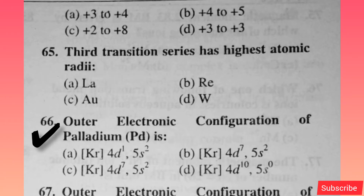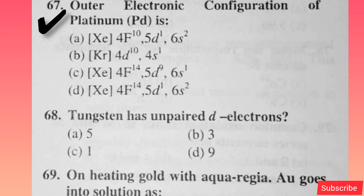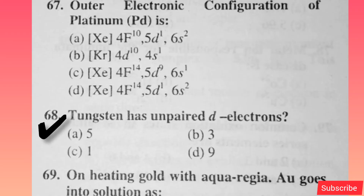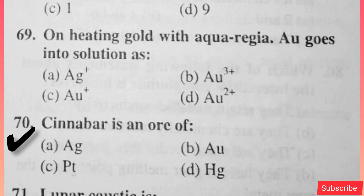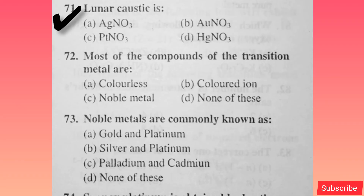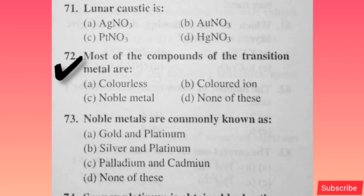Outer electronic configuration of palladium — option D is correct. Outer electronic configuration of platinum — option C is correct. Tungsten has unpaired electrons — option A is correct. On heating gold with aqua regia, AU goes into solution as — option B is correct. Cinnabar is an ore of — option D is correct. Luna caustic is — option A is correct. Most of the compounds of transition metals are — option B is correct.